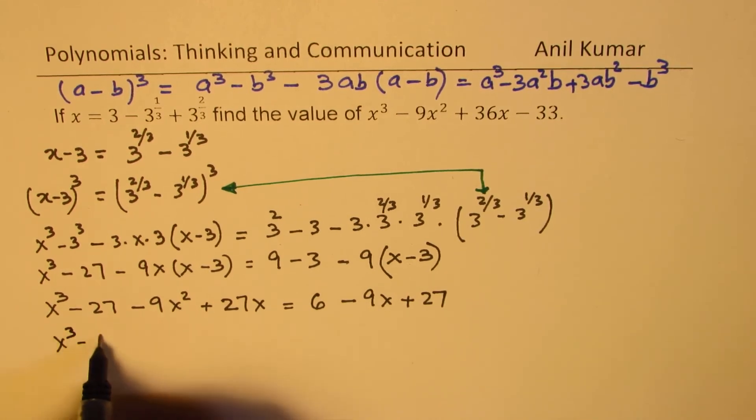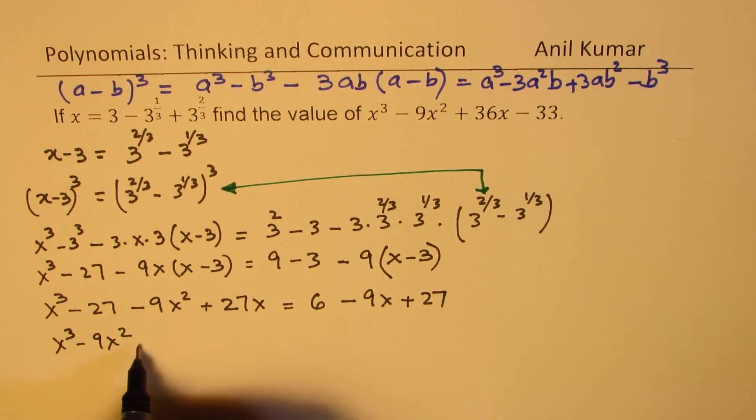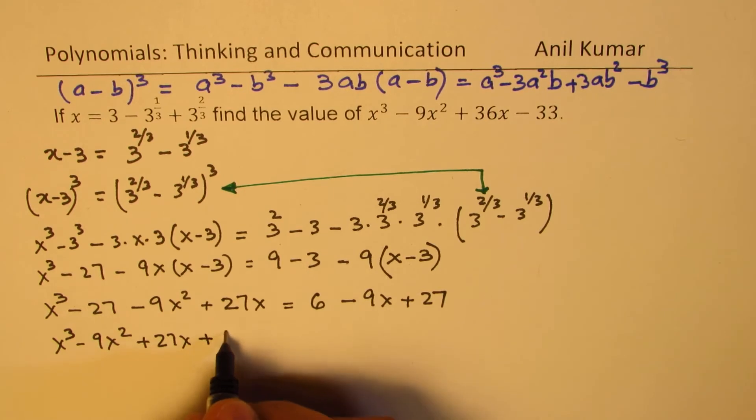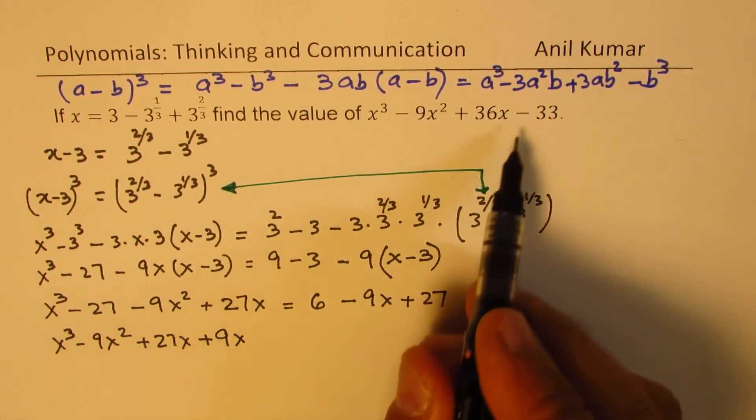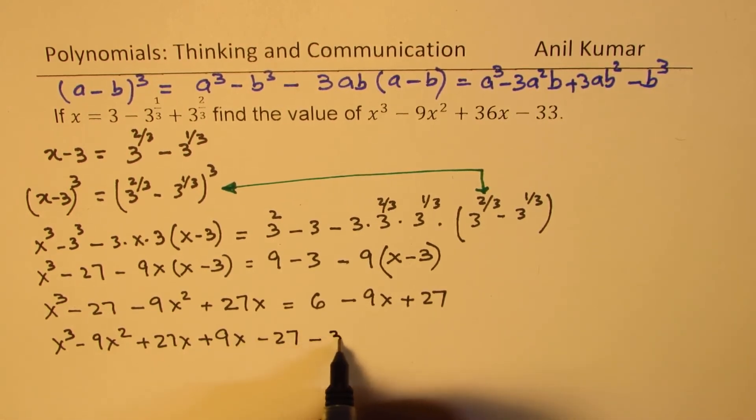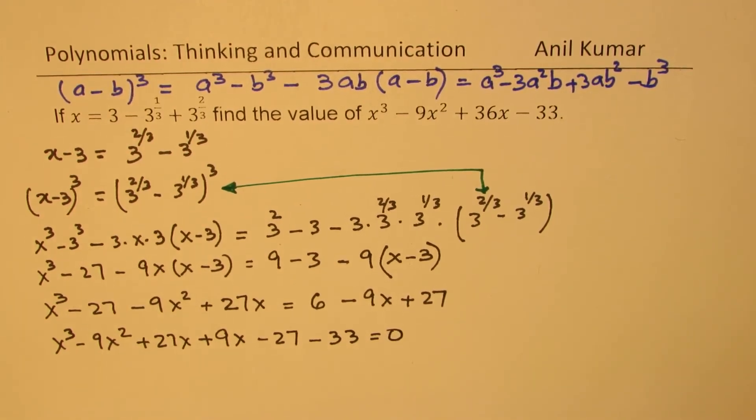About the x terms, we have 27x, bring this here, so plus 9x. As far as the numbers are concerned, we need 33. We have 6 plus 27 is 33, so we have minus 27. And bringing this, we have minus 33 equals to 0.